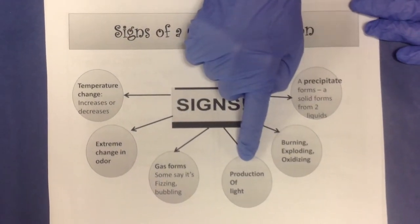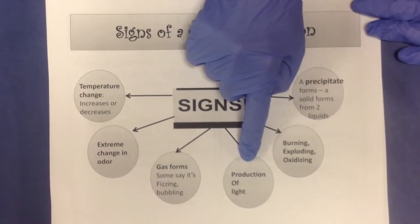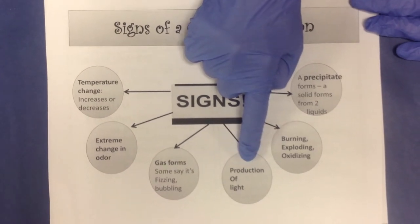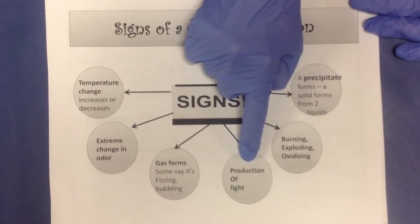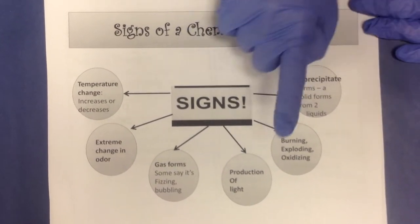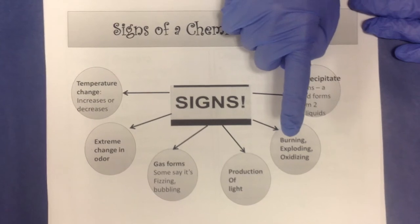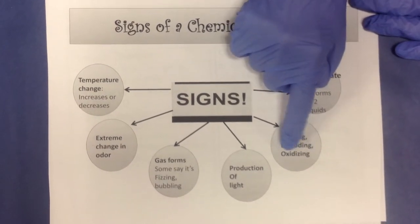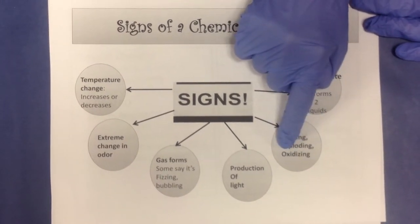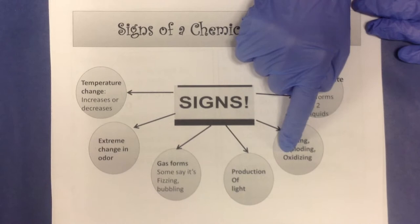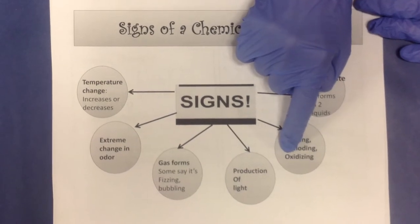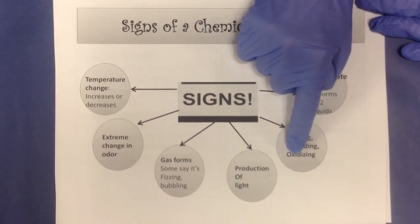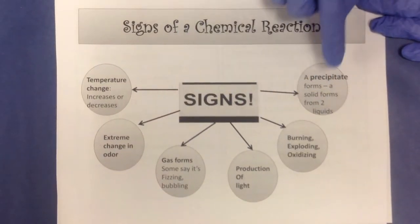Production of light — one good example of that is fireworks, but also burning, exploding, and oxidizing. Oxidizing — you're real familiar with that — that's rust. Don't forget iron and oxygen make rust. That's just oxidation.